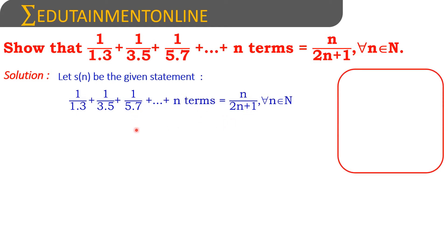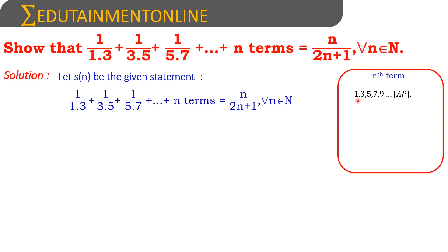First we have to find the nth term because the nth term is not given directly here. The numerator is 1 in all the terms. In the denominator we have two series: the series of first terms which is 1, 3, 5 and so on, and the series of second terms is 3, 5, 7. The first series is in the form of arithmetic progression with first term 1 and common difference 2 between each term.